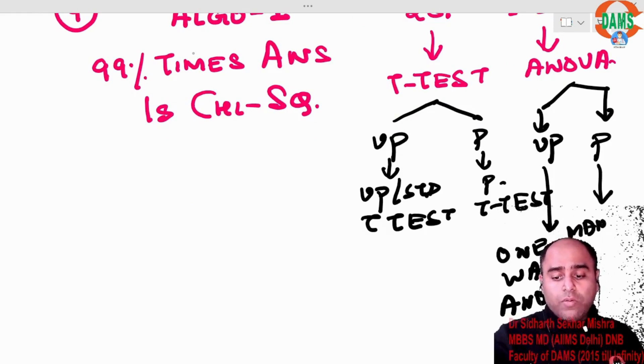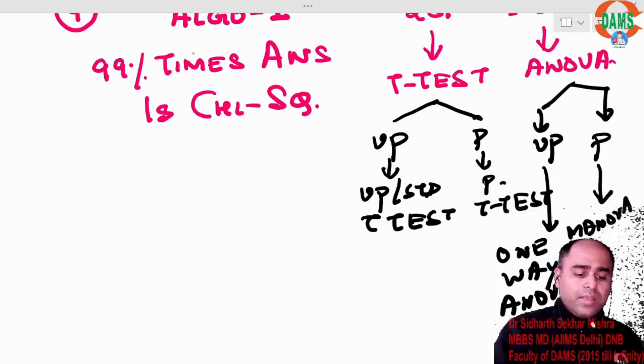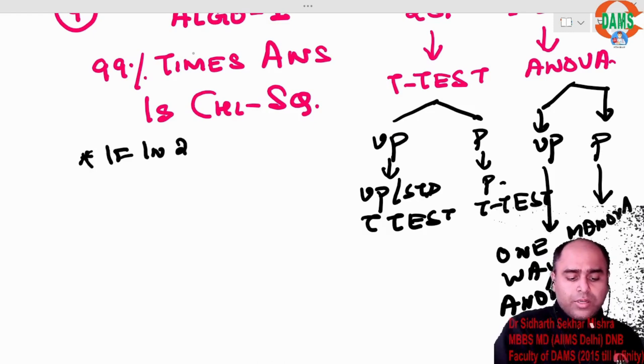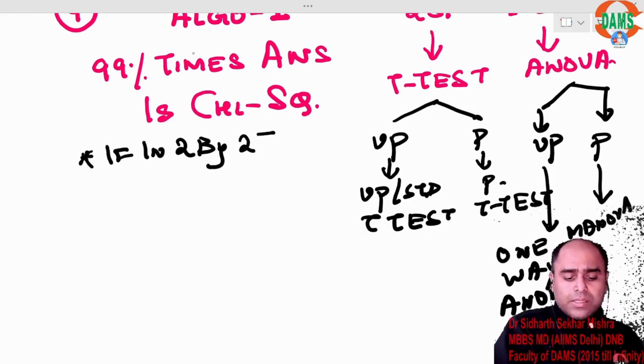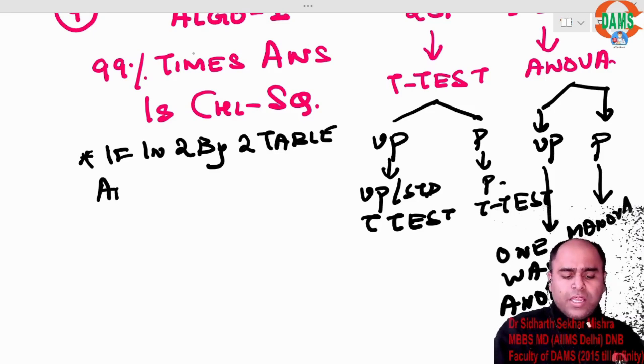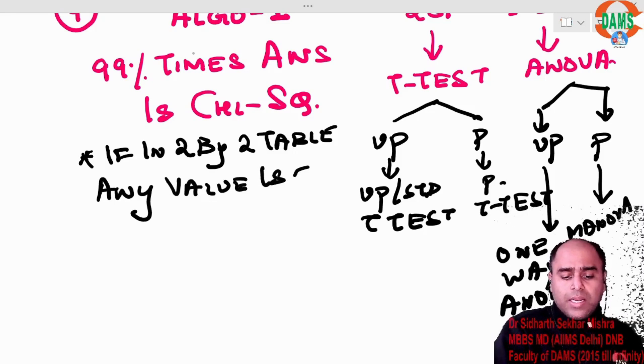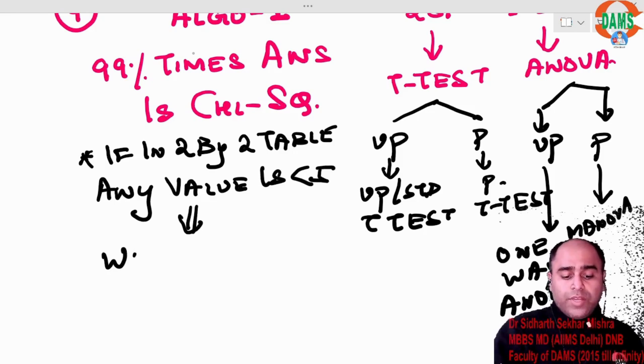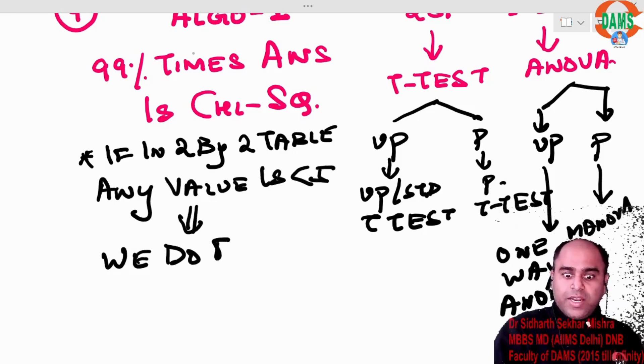Here, if in a 2 by 2 table any value is less than 5, we do Fisher exact test.